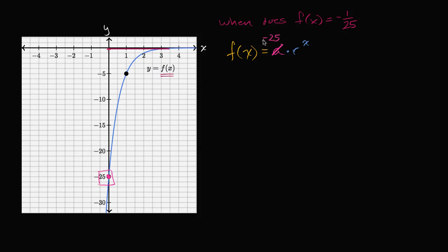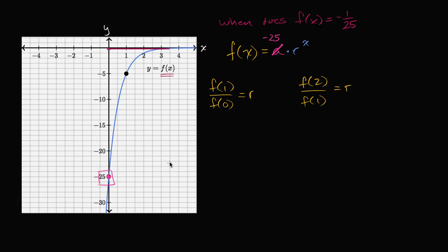Now to figure out the common ratio, the common ratio is the ratio between two successive values separated by one. You could view it as the ratio between f of one and f of zero — that's the common ratio — or the ratio between f of two and f of one. Lucky for us, we know f of zero is negative 25, and we know that f of one is equal to negative five. So we're able to figure out that our common ratio r is negative five over negative 25, which is one-fifth.